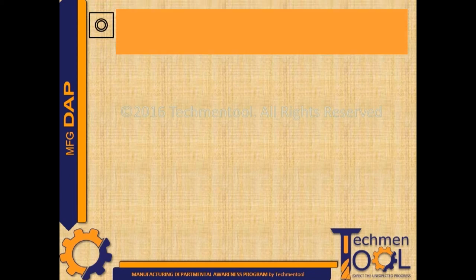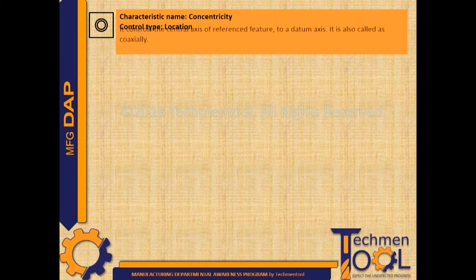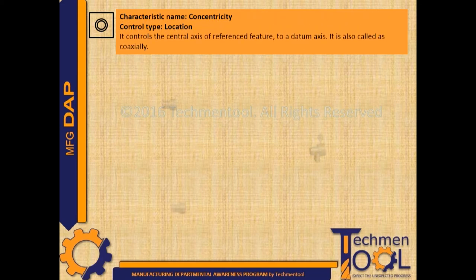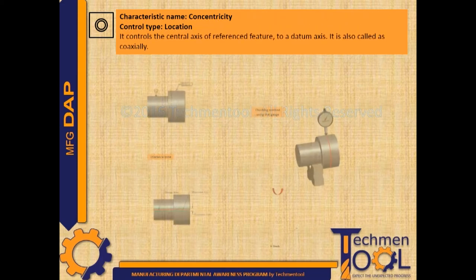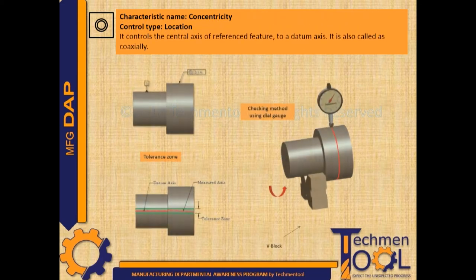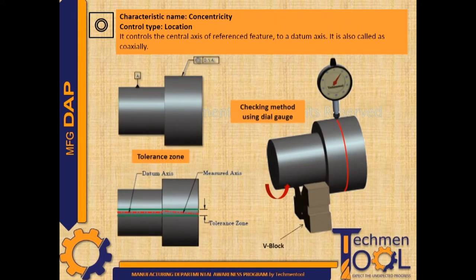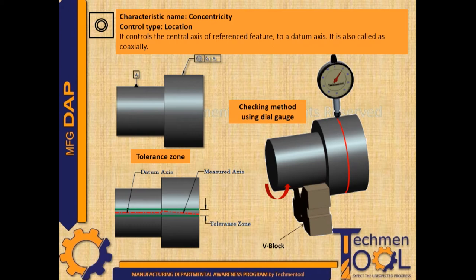Study about concentricity characteristic, its control category, location type, and controls the central axis of reference feature to a datum axis. It is also called as coaxiality. In the given example, the tolerance zone of 0.1 of the cylindrical feature will...